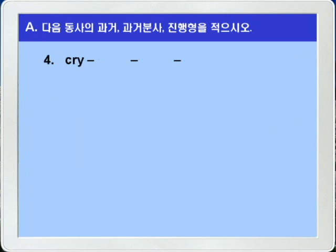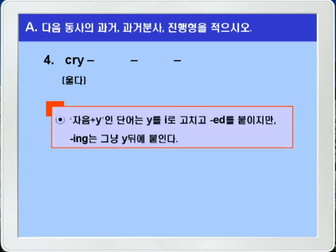4번, cry. 울다라는 뜻의 규칙 변화를 하는 이음절어죠. 자음 플러스 Y로 끝나는 동사니까, Y를 I로 고치고 ED를 붙이면 과거형과 과거 분사형이 되죠. 그러나 진행형은 그냥 Y에 ING를 붙이면 됩니다. 따라서 cry, cried, cried, crying이 되겠습니다.